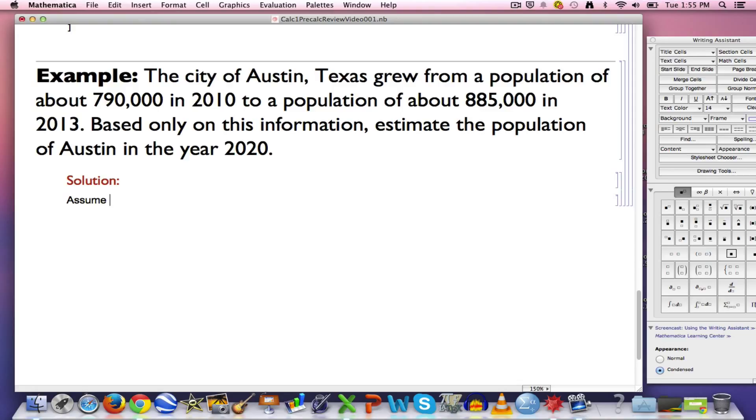Let's assume that this population is modeled by a linear function. That would be the simplest kind of assumption that you can make. It's going to be a graph that's going to be a straight line. That's why we call it a linear function.